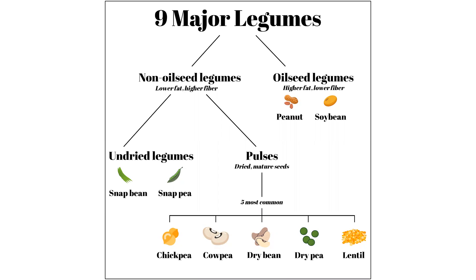Oftentimes people may use the word legume, pulse, and bean interchangeably. But the question is really: are they the same thing? To be honest, a lot of people don't even use the word pulse — it kind of depends on where in the world you are. Some countries use this term more often. But ultimately, what I want to explain here is that legumes, pulses, and dry beans are not the same thing, although they are related.